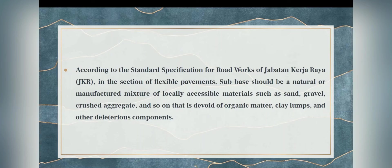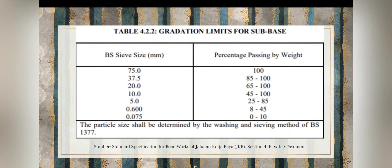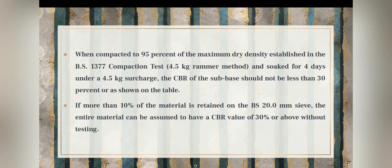According to the standard specification for road works of Jabatan Kerja Raya Malaysia, in the section on flexible pavements, sub-base should be a natural or manufactured mixture of locally accessible materials such as sand, gravel, and crushed aggregate. It must be devoid of organic matter, clay lumps, and other deleterious components, and must be well-graded and meet the quality criteria given in Table 4.2.2, which refers to the gradation limit for sub-base. When compared to 95 percent of the maximum dry density via the BS 1377 compaction test and soaked for four days under a 4.5 kg surcharge, the CBR of the sub-base should not be less than 30 percent.